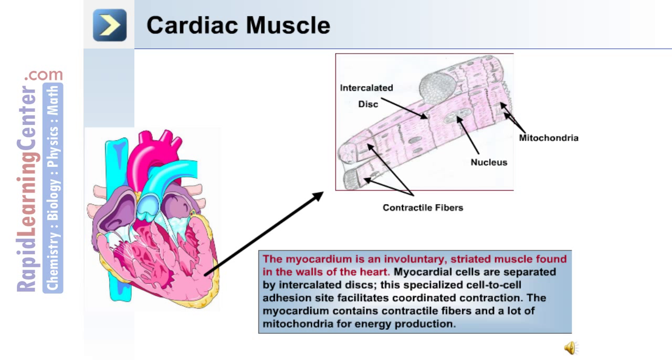The myocardium or heart muscle is an involuntary striated muscle found in the walls of the heart. Myocardial cells are separated by intercalated discs.